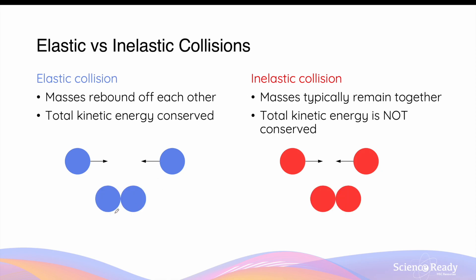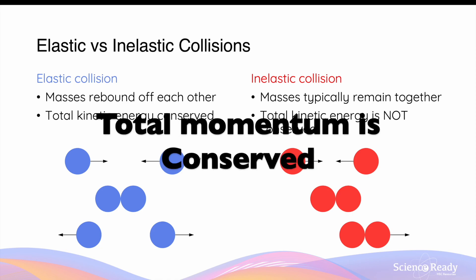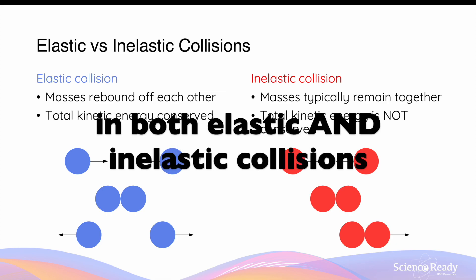When the objects collide, in elastic collisions the objects will rebound off each other and the total kinetic energy will be the same as before the collision. In inelastic collisions, the objects will tend to stick and remain together and move in the same direction. In this instance, the total kinetic energy is not the same as before the collision. While the two types of collisions differ in terms of kinetic energy, it is important to note that the total momentum of the system is still conserved in both elastic and inelastic collisions.